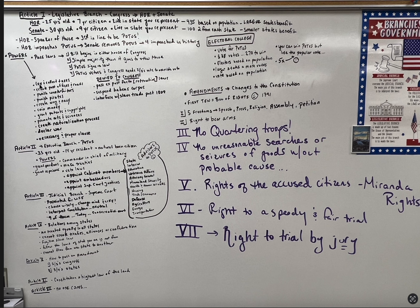There are powers of Congress. Congress can lay and collect taxes, create post offices and post roads, punish counterfeiters, punish pirates on the high seas, create an army and navy, coin money, grant patents and copyrights, promote arts and sciences, create the naturalization process, declare war, and they have the Necessary and Proper Clause, which means they can declare any laws that they think are necessary and proper at the time.